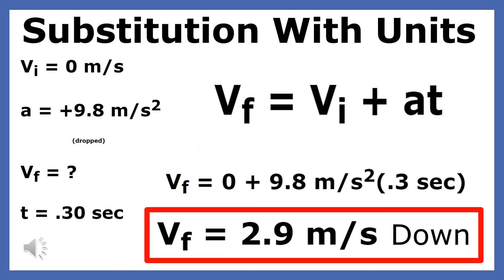This is the substitution with units. When you accelerate at a rate of positive 9.8 meters per second squared for just .3 seconds, you will only reach a velocity of 2.9 meters per second down.